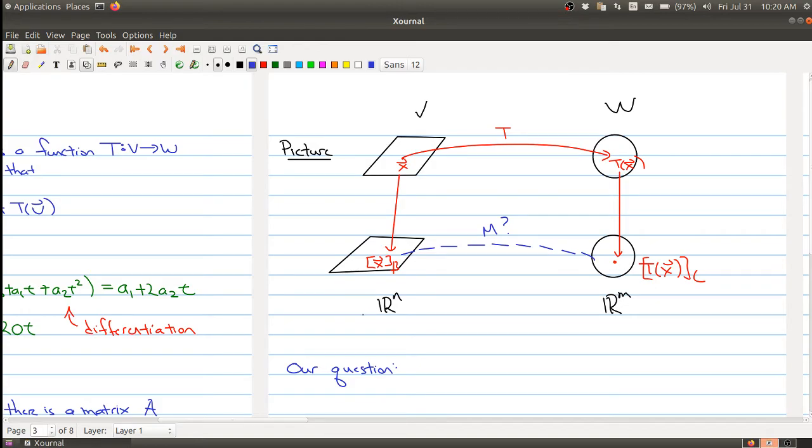You take the T upstairs, you drop everything downstairs to R^n and R^m by taking the coordinates, and that really gives you a new function from here to here. And then what is this particular M?